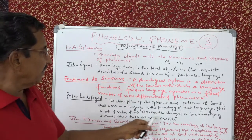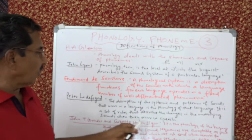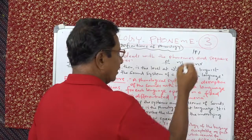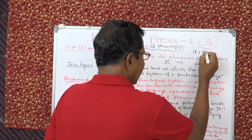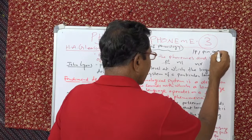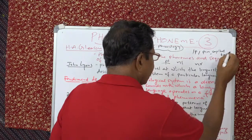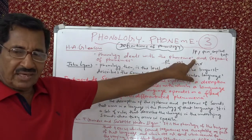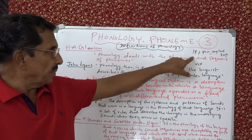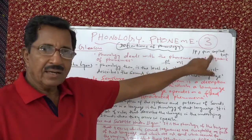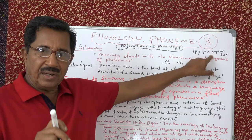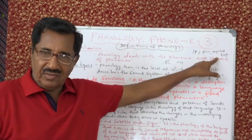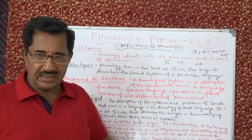Phonology is also a set of rules that describe the changes in the underlying sounds when they occur in speech. For example, the underlying phoneme /p/ changes depending on its context: the P in 'pin', the P in 'capital', and the P in 'top' are all three different. These are changes in the underlying sound that happen in actual speech situations.